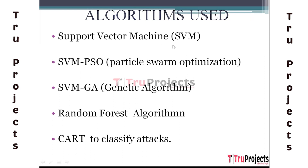Support Vector Machine (SVM) is a machine learning algorithm used to classify data points into different categories. SVM is employed for detecting anomalies and classifying potential cyber attacks within the train real-time ethernet network. By utilizing SVM for anomaly detection and attack classification, the network can proactively identify and respond to cybersecurity threats, ensuring the safety and reliability of the train communication system. SVM's ability to handle complex high-dimensional data makes it suitable for anomaly detection in critical infrastructure.